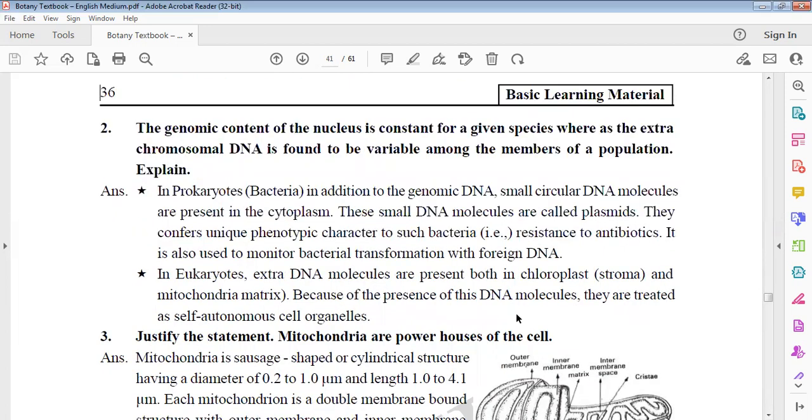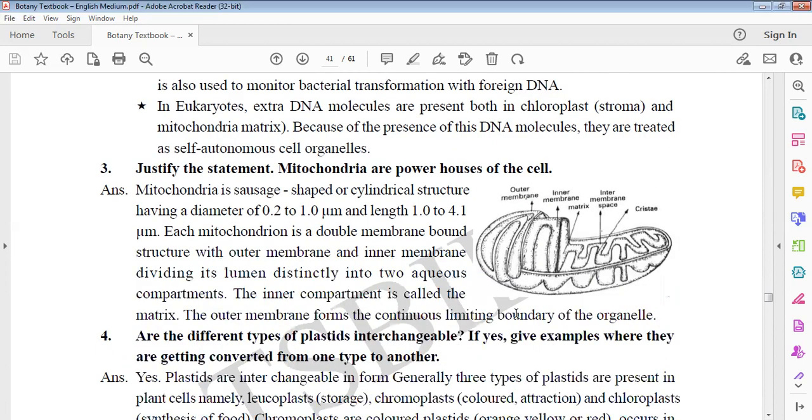Genomic content of nucleus is constant. Extra chromosomal DNA is found in variable members of population. In bacteria, in addition to genomic DNA, there is small circular naked DNA. This small DNA is called plasmid. And they exhibit unique phenotypic characters - none other than resistance to antibiotics. They are used in bacterial transformation with foreign DNA. And next, in eukaryotes there is extra DNA, both in chloroplast and in mitochondrial matrix. They are self-autonomous cell organelles.